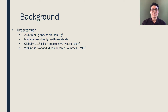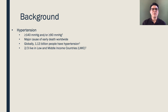I wanted to start off by just giving a brief background about hypertension. It's usually diagnosed when your blood pressure is greater than 140 systolic, which is your top number, and or greater than 90 diastolic, which is your bottom number. It's known to cause a variety of health complications and is a major cause of early death. Worldwide, around a billion people have hypertension, and a majority of people living with hypertension live in low and middle-income countries.